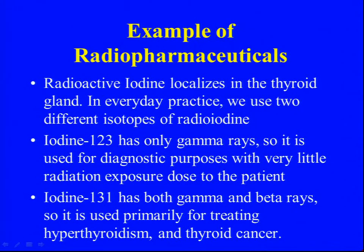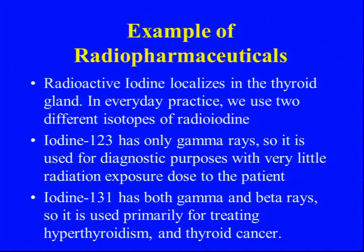A good example of two different radiopharmaceuticals used for different purposes is radioiodine. Iodine is very important in our diet, and the gland most involved with iodine is the thyroid gland — it picks up iodine from salt and makes thyroid hormone. If we want to study problems of the thyroid gland, we use radioactive iodine, which the thyroid gland cannot distinguish from normal iodine. With iodine-123, which has gamma radiation, we can take pictures and image the thyroid.